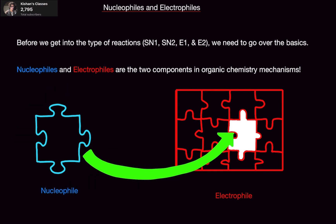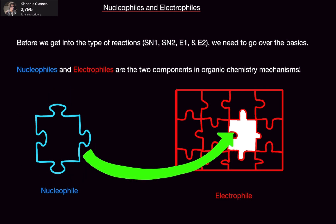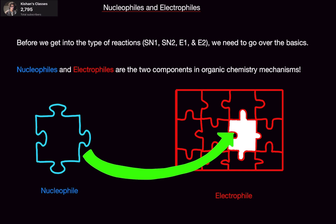You can think of nucleophiles like a puzzle piece, and electrophiles like a complete or almost complete puzzle. Say we have a 100-piece puzzle that is 99% complete — it's only missing one piece. That one puzzle piece is going to fit into the remaining space. We can call this puzzle piece a nucleophile; it's essentially going to attack the puzzle and become part of it. The electrophile is the puzzle itself, accepting the nucleophile.